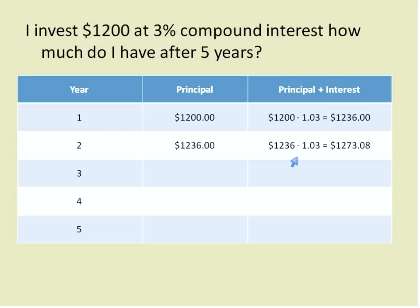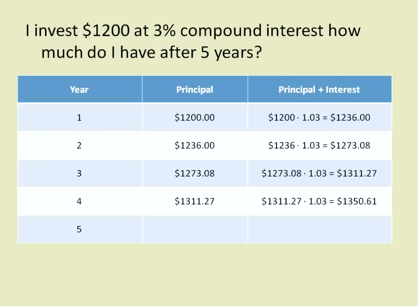My principal for year two times 1.03 gives me $1,273.08. That becomes my new principal, which I multiply times 1.03 and continue the process. It's $1,311.27 times 1.03 gives $1,350.61. That becomes my principal for year five. My final amount after five years of compound interest would be $1,391.13.